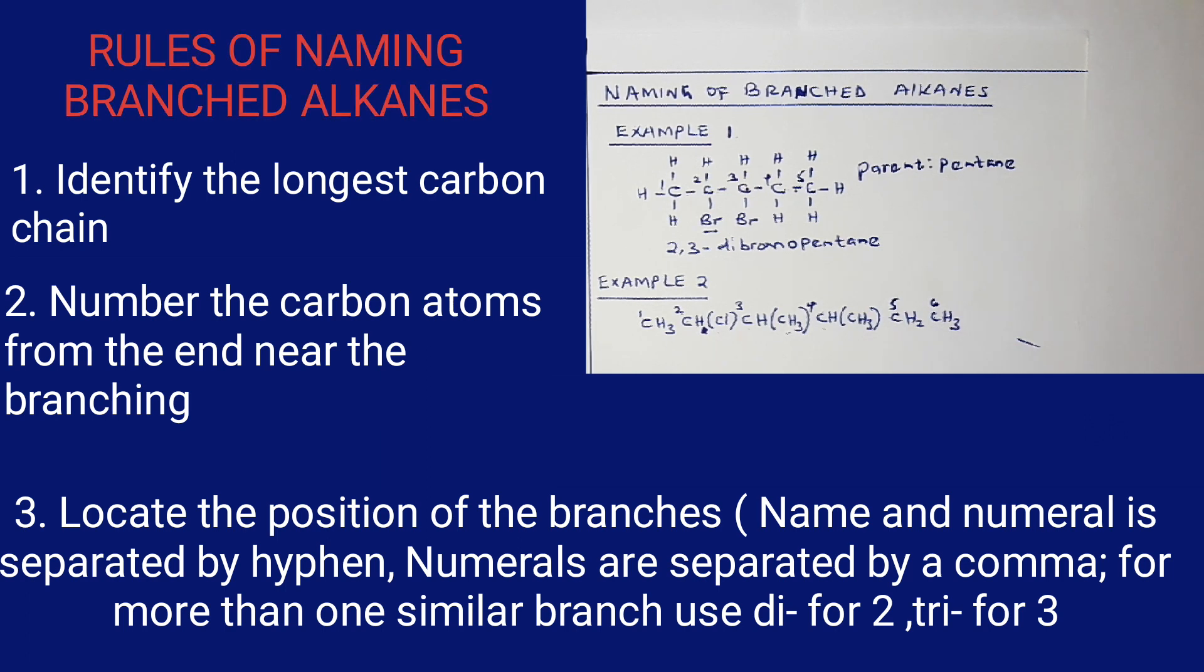So now we name this compound with the parent name being hexane. We have two methyl branches, so we'll have di-. Then we have a chloro and a methyl. We are supposed to name them alphabetically, so this compound will be named starting from chloro.